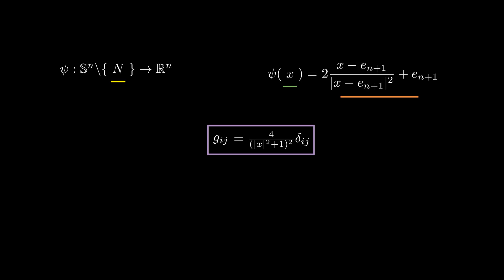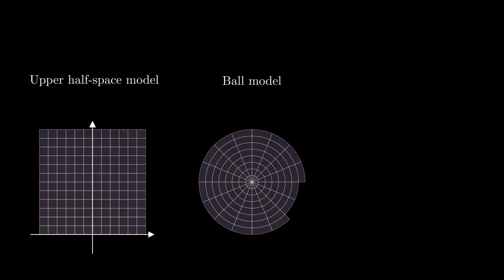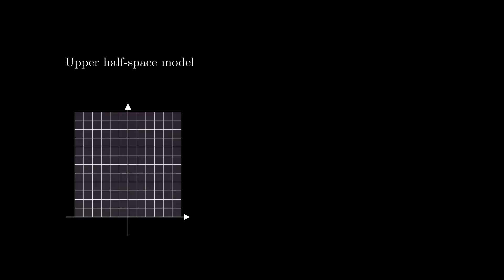Now, we will talk about the hyperbolic space. It has three main models, the upper half space model, the ball model and the hyperboloid model.